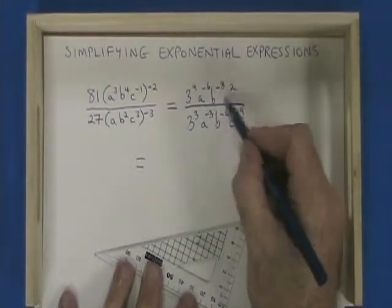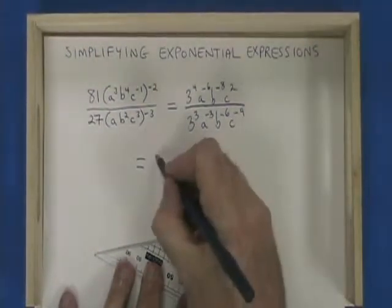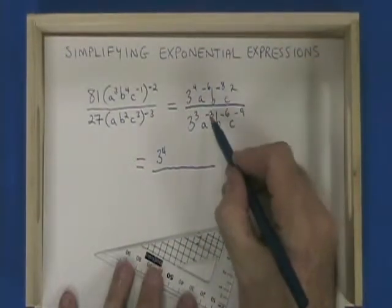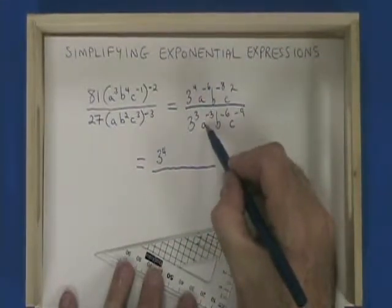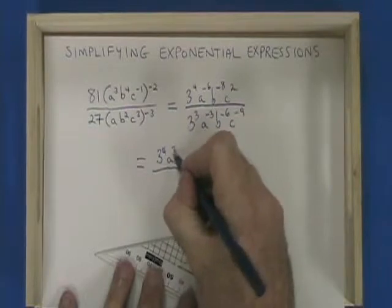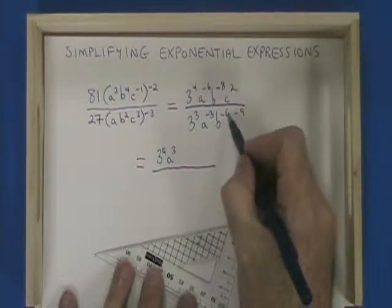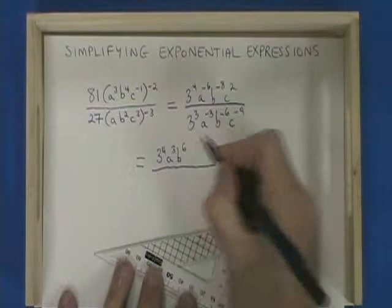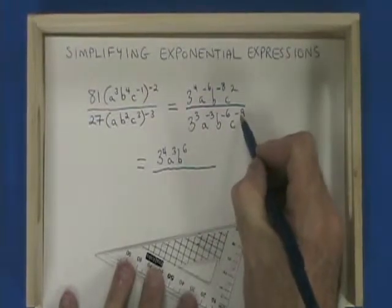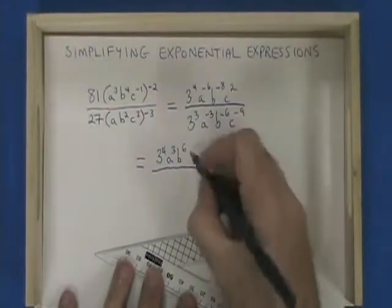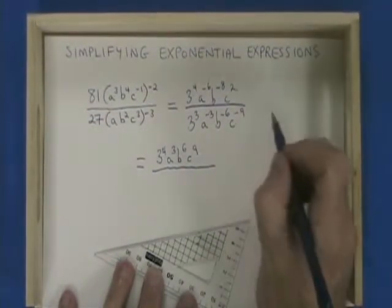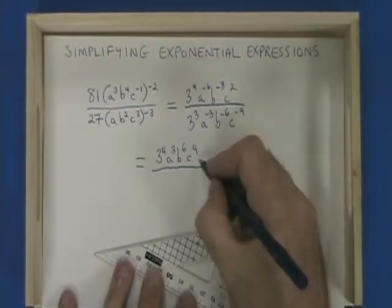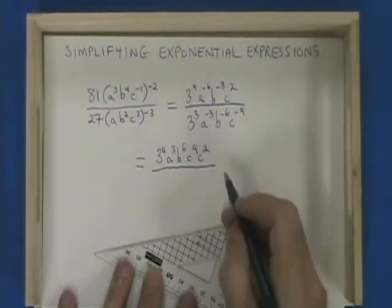Here I'm going to get rid of all of my negative exponents. I'm keeping 3 to the 4. I'm moving the a to the negative 3 from the bottom to the top so it becomes a cubed. I'm moving the b to the negative 6 from the bottom to the top so it becomes b to the 6. I'm moving the c to the negative 9 from the bottom to the top so it becomes c to the 9. And I'm keeping c squared on the top because it already has a positive exponent.